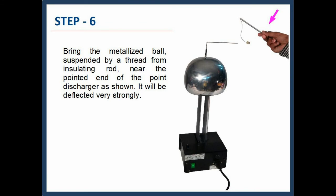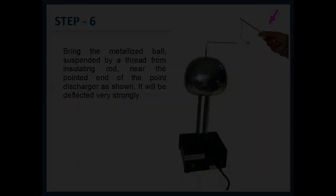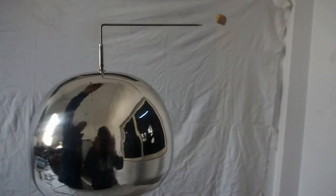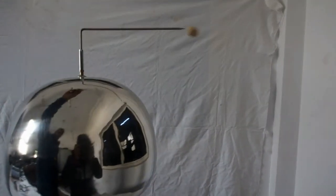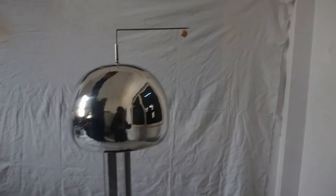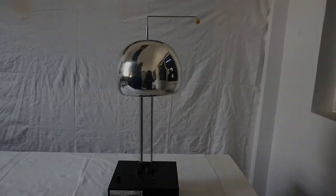Step 26: Bring the metallized ball suspended by a thread from insulating rod near the pointed end of the point discharger as shown. It will be deflected very strongly. You will notice that the ball is being deflected very strongly and it will be impossible to accumulate any charge on the dome while the point discharger is still kept connected to the dome.